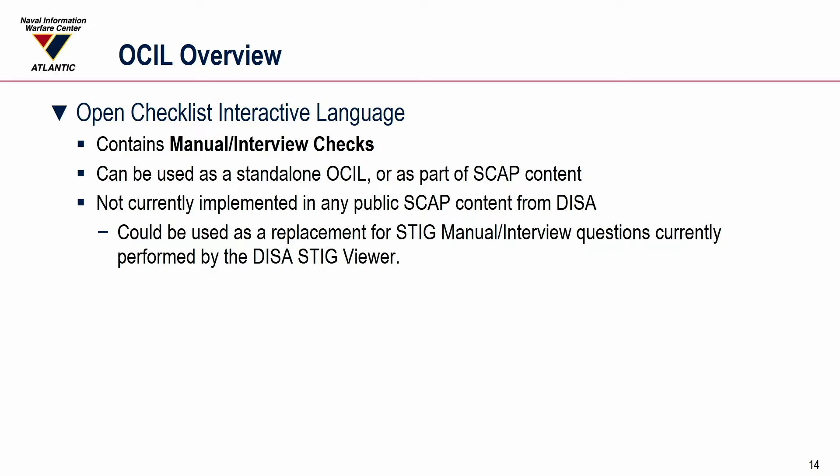OCIL — the Open Checklist Interactive Language — is a manual interview format. You can create standalone OCIL documents or include them as part of SCAP content. It's not currently implemented in any content from DISA and is not widely used in the field. It could in the future be used as a replacement for STIG manual interview questions currently performed by the STIG Viewer. The XCCDF document, instead of pointing to an OVAL check, would point to an OCIL check. SCAP validator tools such as SCC would display the question along with types of answers — true/false, multiple choice, or a data entry field — and the pass/fail would be computed as part of OCIL and roll back up into XCCDF.